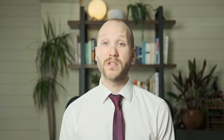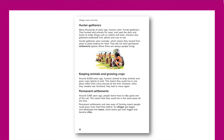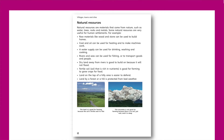Lesson two asks, what affects where people live? This will allow pupils to consider how and why humans first began to settle. There are good opportunities for links here with the prehistoric unit. Finally, natural resources will be explored, and how these can make a location more attractive to settle near.